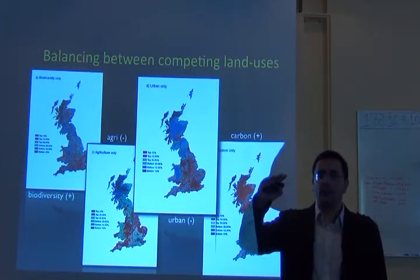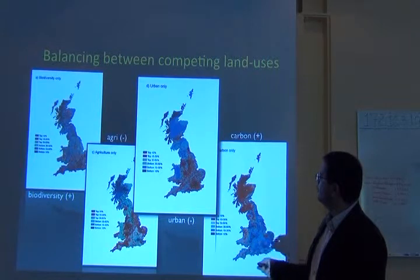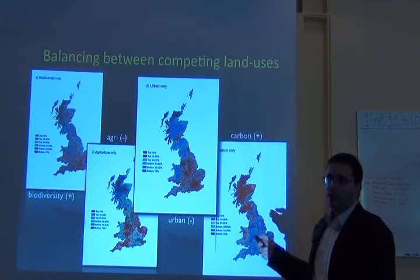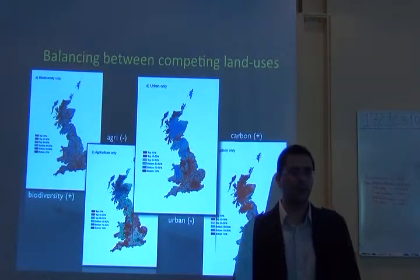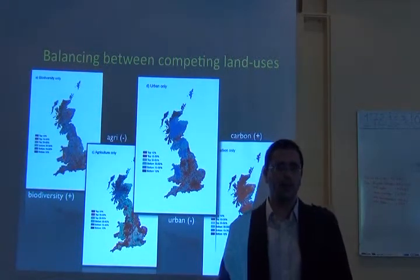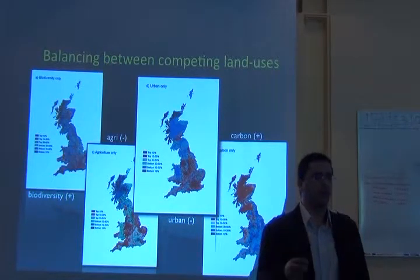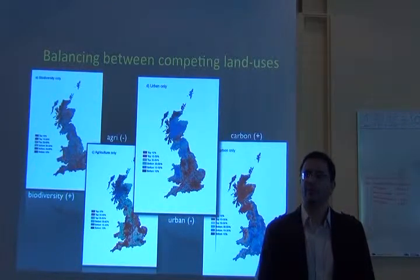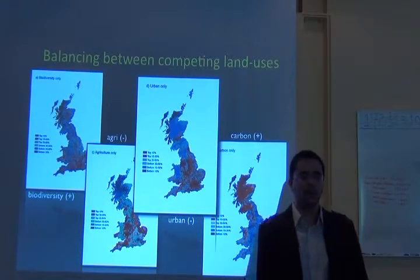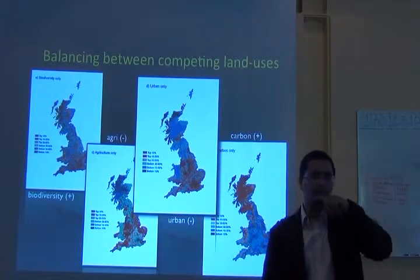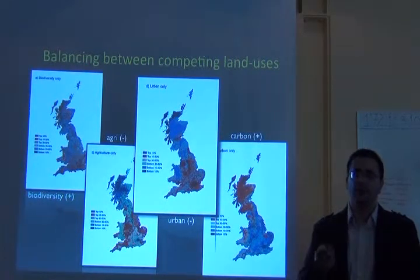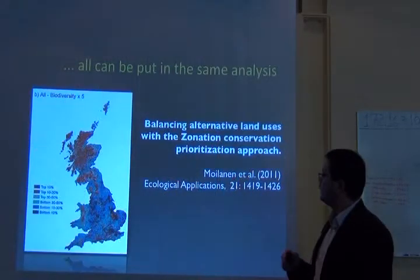So you have rasters for species distribution, one raster for agriculture, another for urbanization, and another for carbon sequestration. You put a positive weight on carbon sequestration because you want to select sites with higher carbon values, but negative weights on agriculture and urbanization because you want to avoid conflict with those. You can have multiple features with positive or negative weights and view results in separate performance curves, or combine everything into a single value and treat it as a formal cost.